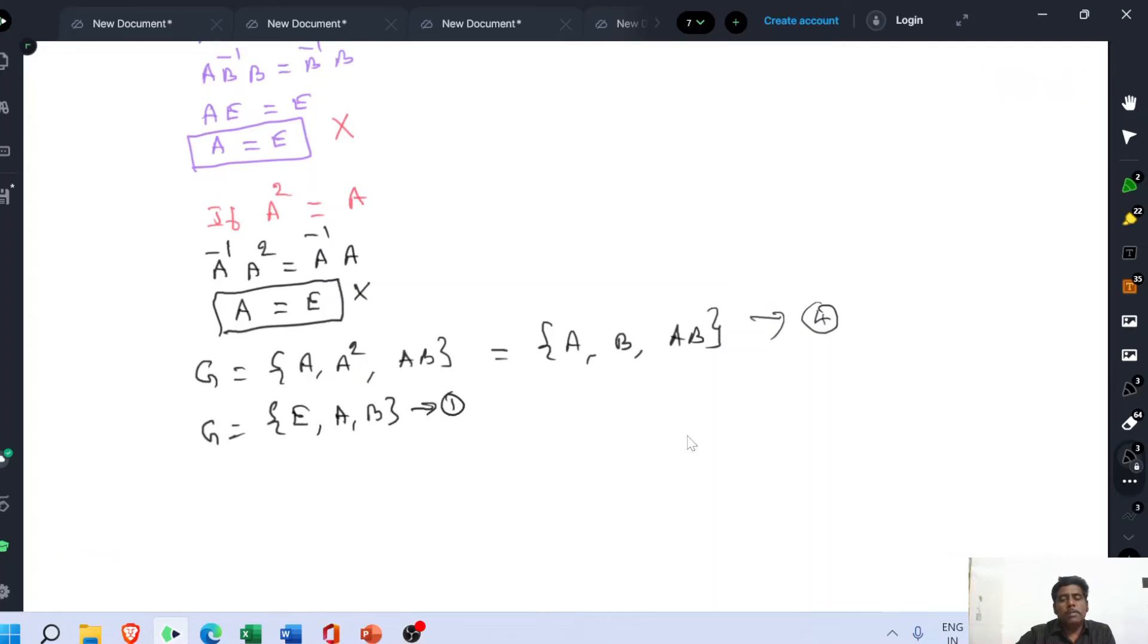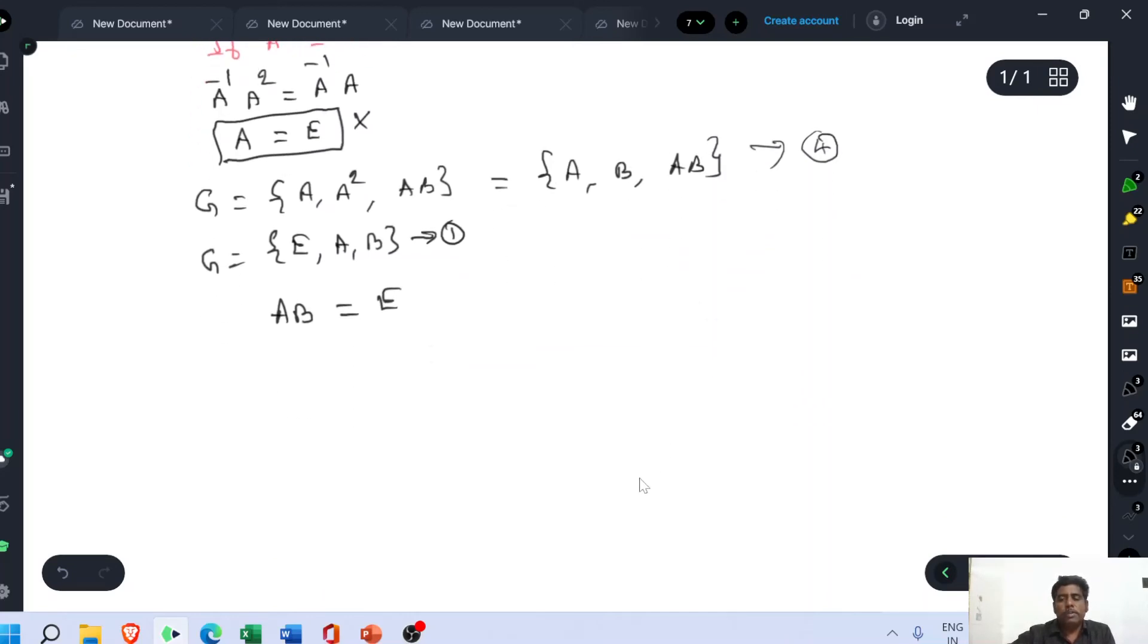A and B are the elements, then AB. If you compare these based equations, then we can get AB equal to E. Therefore, the actual equation G equal to E, A, B is modified as A.